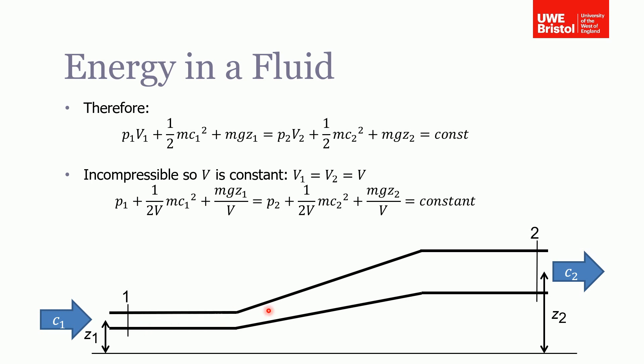So at any point in this pipe, this is a constant. Obviously the velocity will change as you're going through this expanding section and the height is also changing. But the sum of those things will always be a constant.